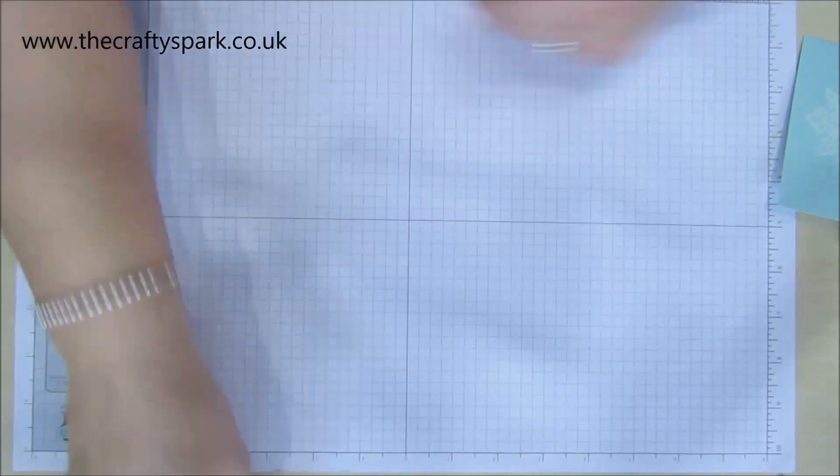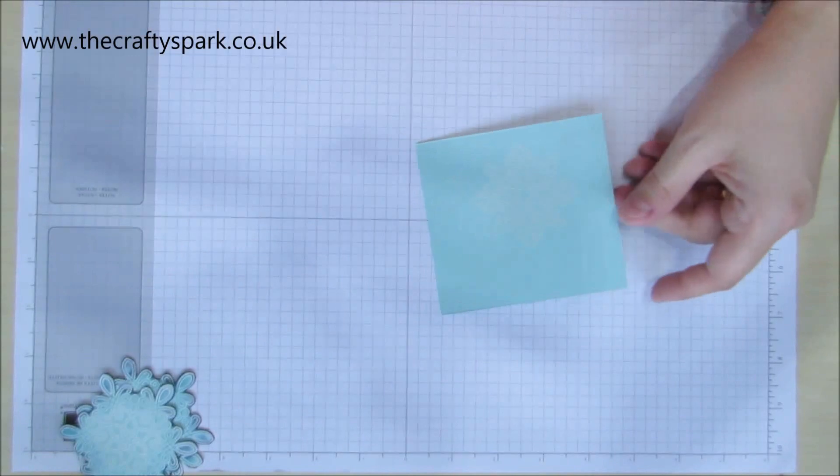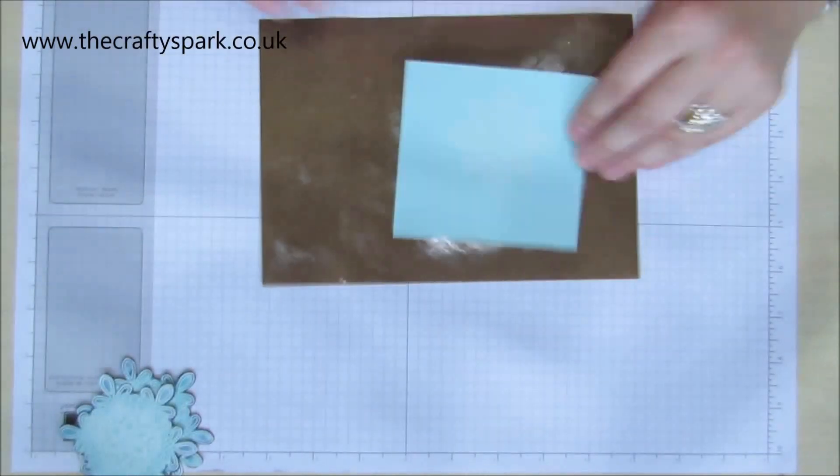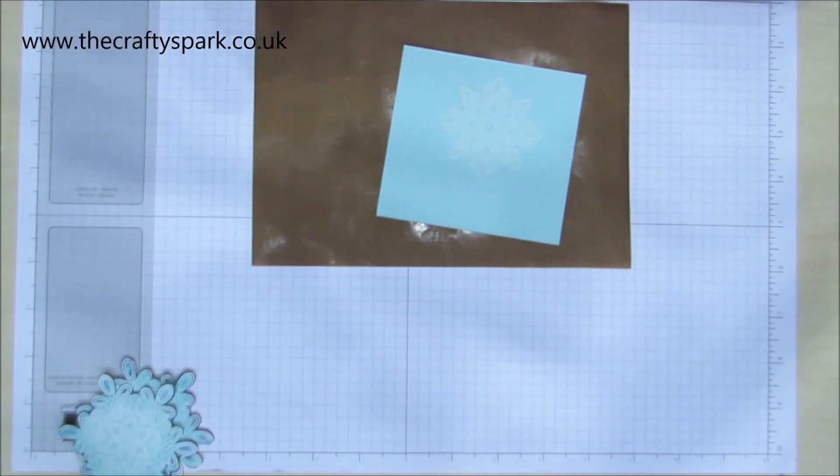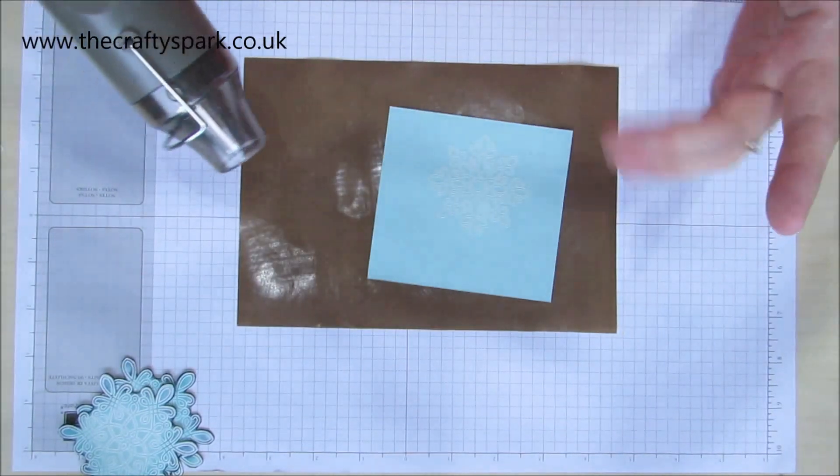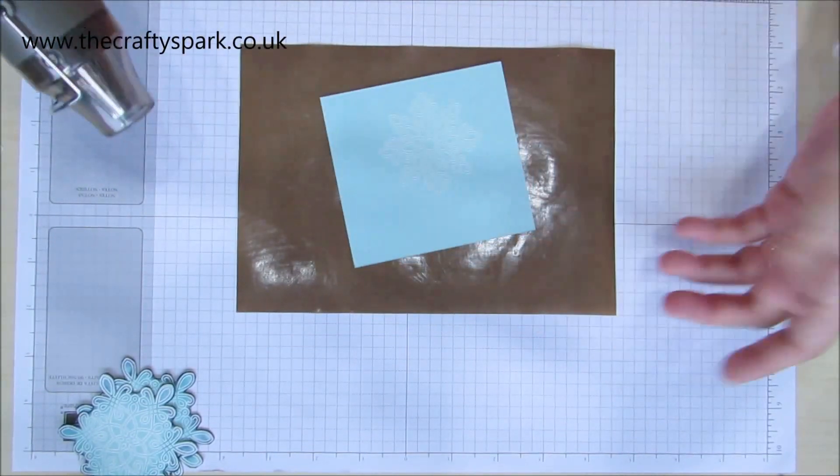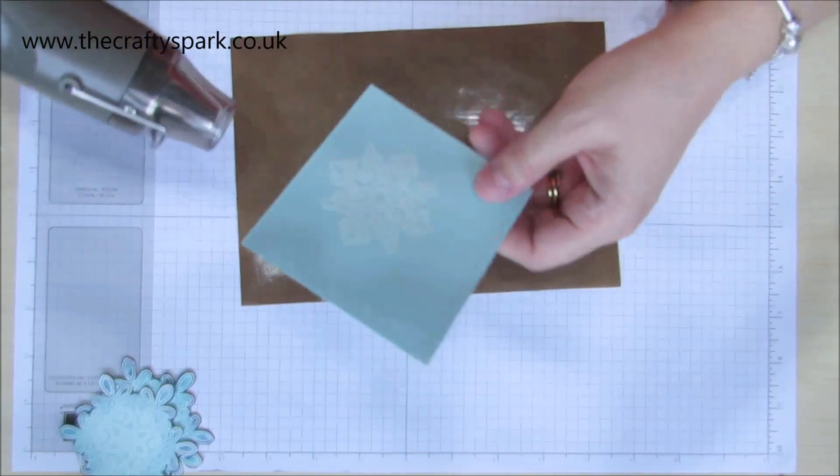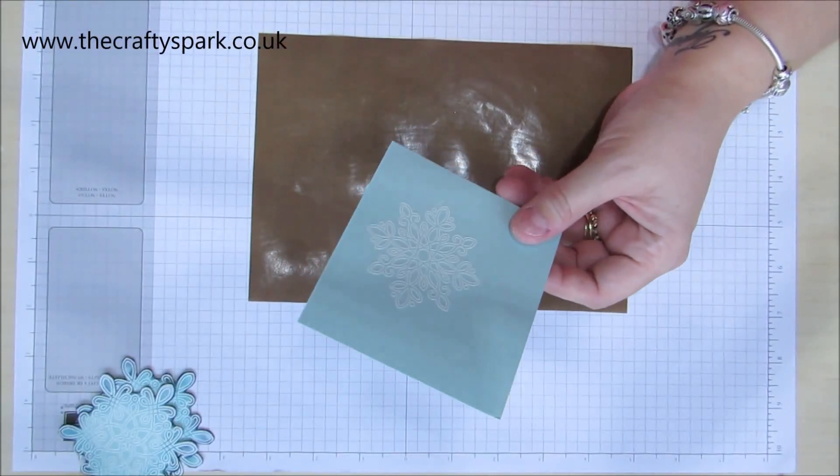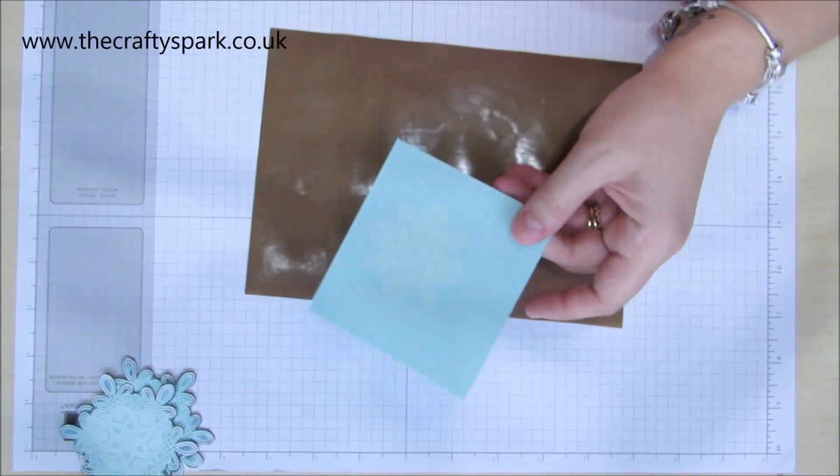Let's move that out of the way. I'm going to be using that again in a minute so I'm not going to get rid of it entirely. Now use your heat tool. This little mat, by the way, is just to protect the surface. It's a heat resistant mat because otherwise I end up with all the paper underneath going wrinkly.